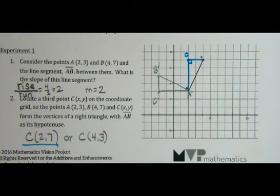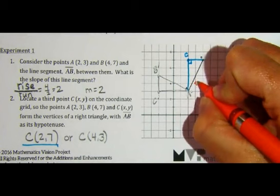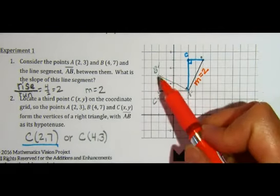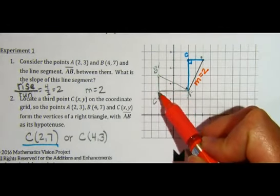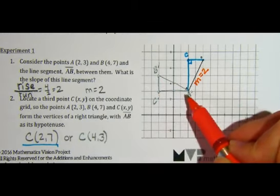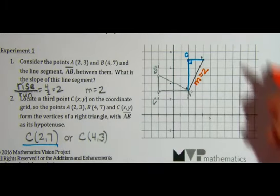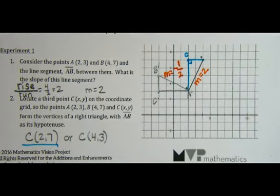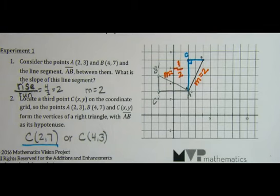Segment AC, which was vertical on the pre-image, is now horizontal on the image. We can also compare the slope of the hypotenuse for the pre-image and the slope for the hypotenuse of the image. The slope of the hypotenuse for the pre-image, which we found in part 1, is 2. For segment A prime B prime, the slope is rise negative 2, run 4, so the slope of A prime B prime is negative one-half. Since the slope of A prime B prime is the opposite reciprocal of the slope of segment AB, we know that segment A prime B prime and segment AB are perpendicular.